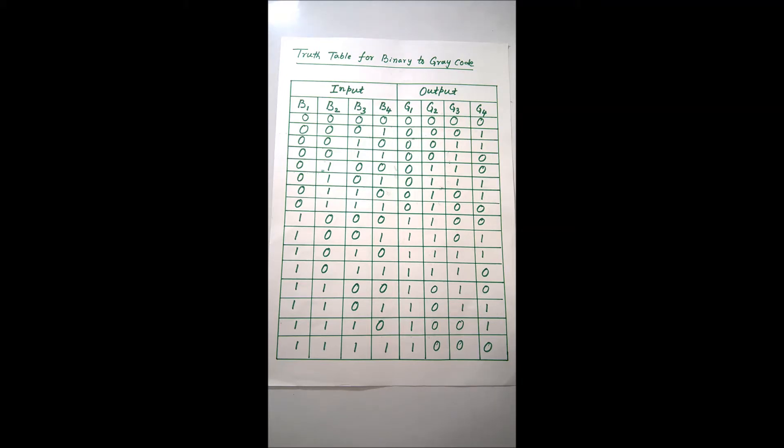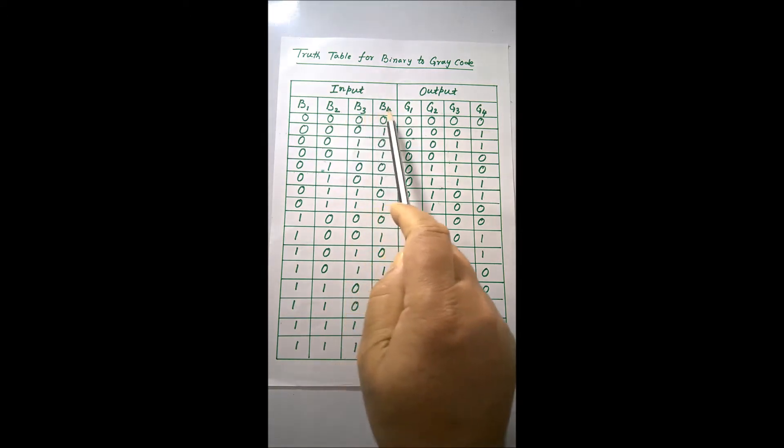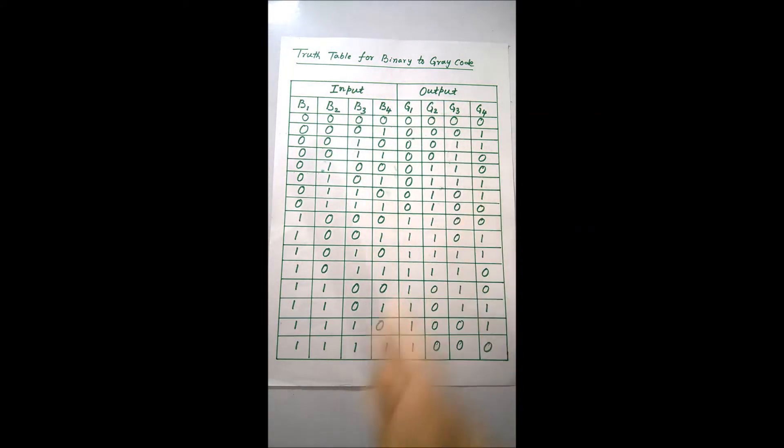I shall show you how to construct the truth table for binary to Gray code conversion. For a 4-bit system, b1, b2, b3, and b4 are the inputs, and the outputs are g1, g2, g3, and g4.